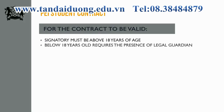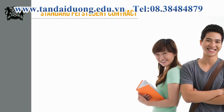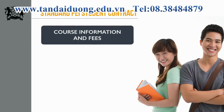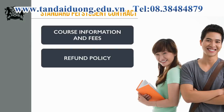You must read and understand every term and condition of the contract before you sign. For the contract to be valid, the signatory must be above 18 years of age. For those of you under 18, please make sure that your parent or legal guardian is with you to go through the contract and this video together. For the standard PEI student contract, there are three main categories to take note of: first, course information and fees; second, the refund policy; and third, additional information.